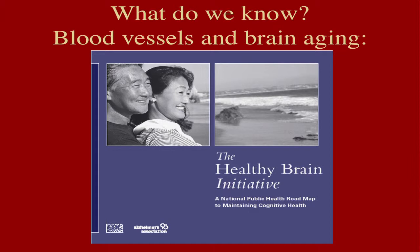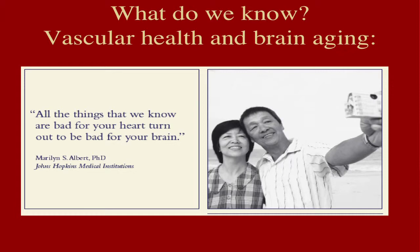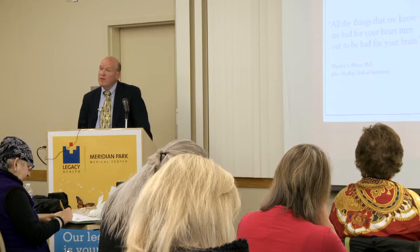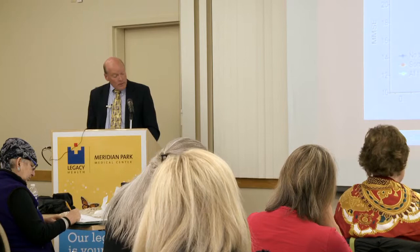I want to talk about one other potential target: the blood vessels in the brain. This picture is from a monograph from the Centers for Disease Control in combination with the Alzheimer's Association. The thrust of the entire monograph was that all the things we know are bad for the heart turn out to be bad for the brain — everything we know about blood pressure, cholesterol, blood sugar has as much of an effect on the brain as on the heart.